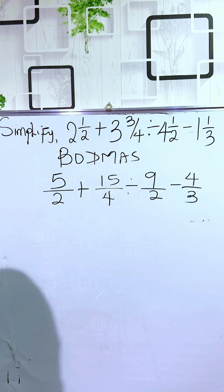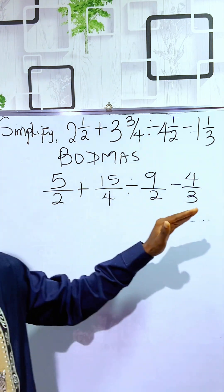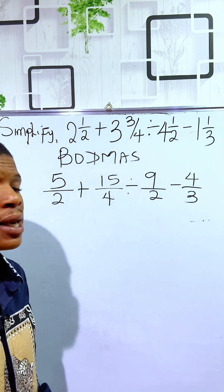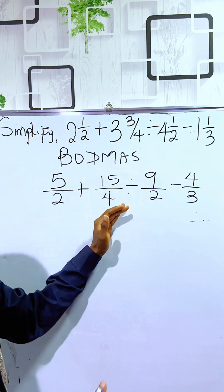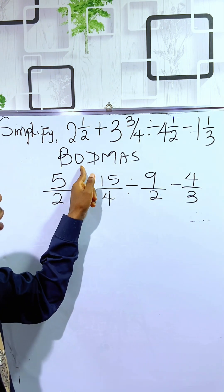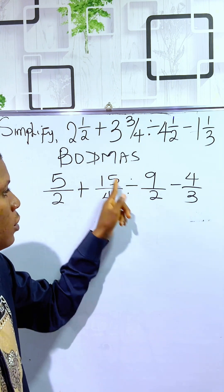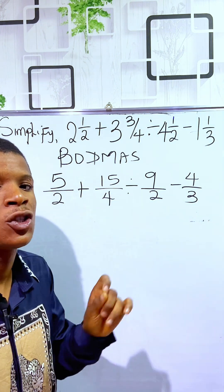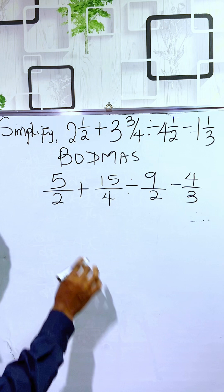So, we are done with the first stage. After we have converted, we will look at the BODMAS again. Brackets. There are no brackets here. Order. There is no order here. Division. We have division. So, we treat division first. So, how do we divide?